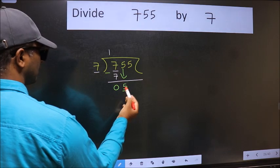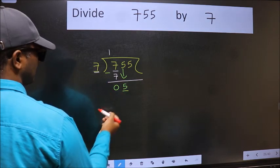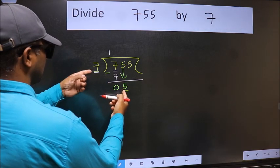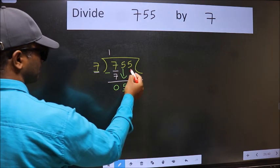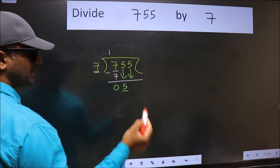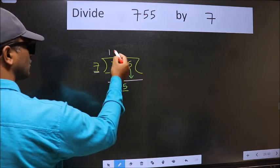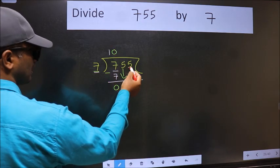Now here we have 5 and here 7. 5 is smaller than 7, so we should bring down the second number. The rule to bring down the second number is we should put zero here, then only we can bring this number down.